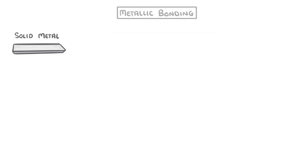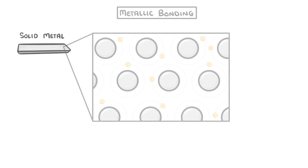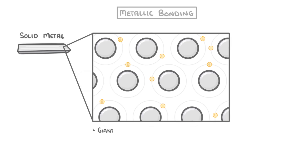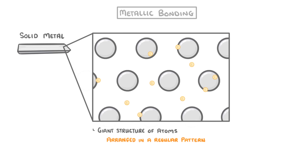If we think of a solid metal, it basically consists of a giant structure of atoms arranged in a regular pattern. In this picture, we've shown each atom surrounded by the electrons in its outermost shell. When all these atoms are together in a metal, they actually give up these outer shell electrons and share them with all the other atoms in the metal.